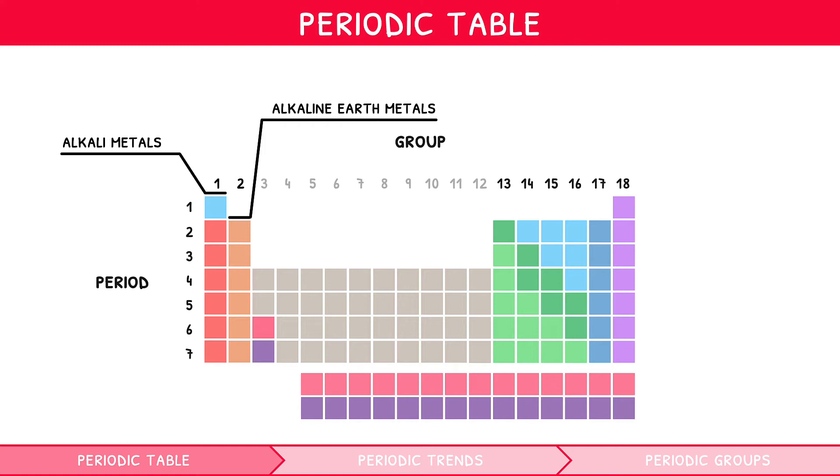Group 3 to 12, which are known as the transition metals. These will be explored in greater detail in our higher-level IB chemistry topic 13 video series, Group 17, which are known as the halogens, and Group 18, which are known as the noble gases.